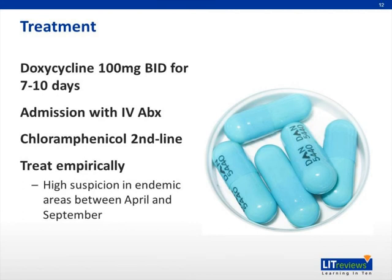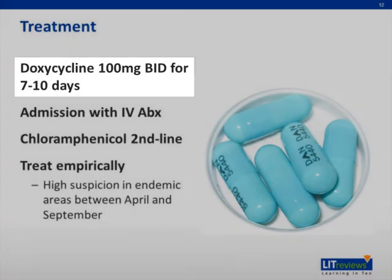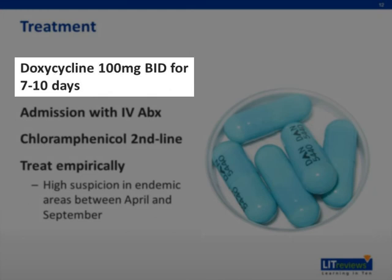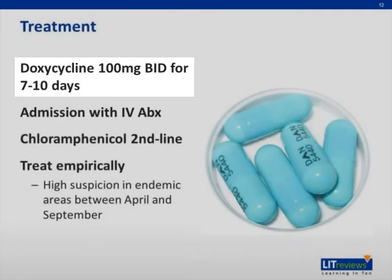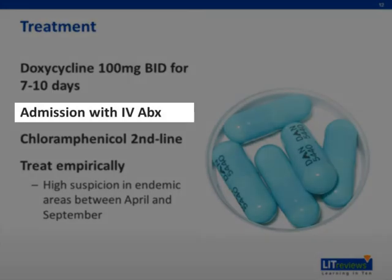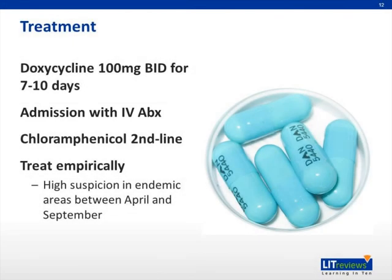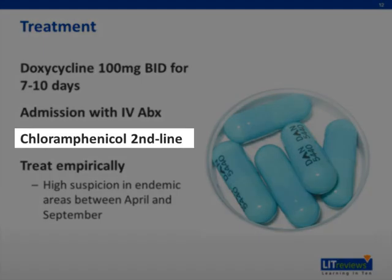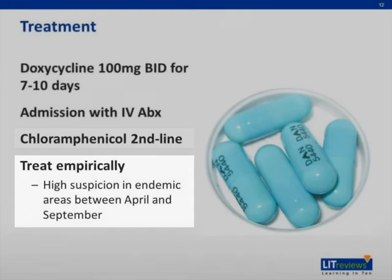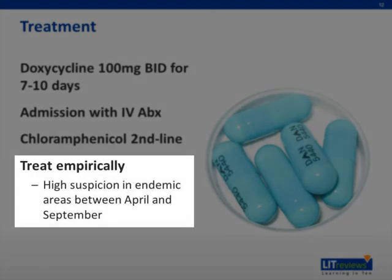The accepted standard treatment for Rickettsia rickettsii infection is oral doxycycline 100 mg twice daily for 7 to 10 days. Moderate or severe cases may warrant inpatient hospital admission with IV antibiotics. If there is a contraindication to doxycycline, such as allergy or in pregnant women, chloramphenicol may be used as a second-line treatment. I cannot stress enough the importance of treating suspected patients empirically and not delaying treatment while waiting for laboratory confirmation — you must have a high suspicion in endemic areas, especially between April and September.